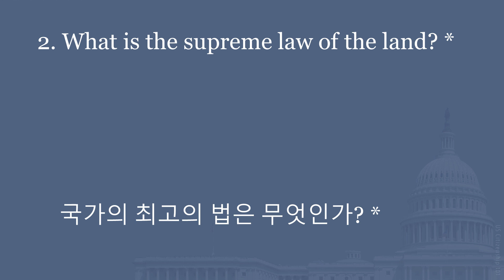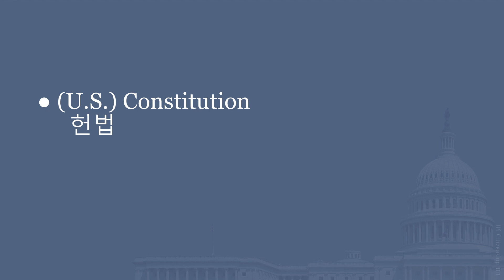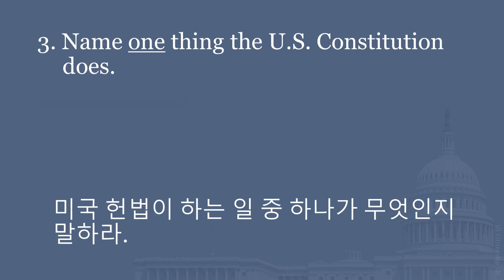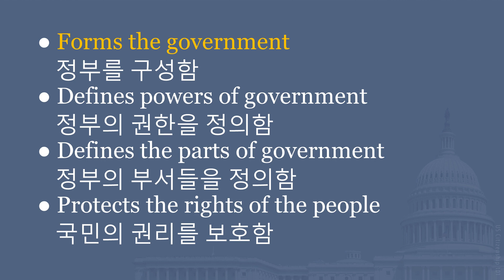What is the supreme law of the land? The U.S. Constitution. Name one thing the U.S. Constitution does. Forms the government. Defines powers of government. Defines the parts of government. Protects the rights of the people.